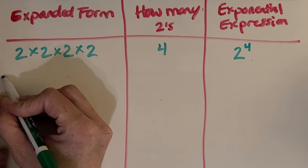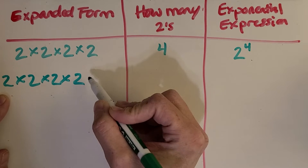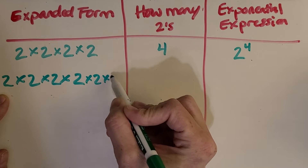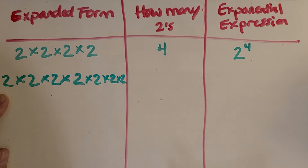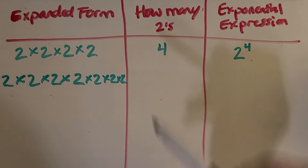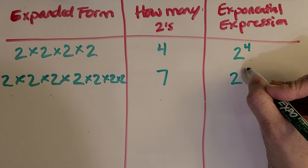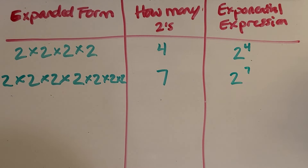Let's try another one. There's the expanded form — now how many 2s do you see? 7. Then what is the exponential expression? You got it — 2 to the 7th power. You can also say 'to the 7th power.'